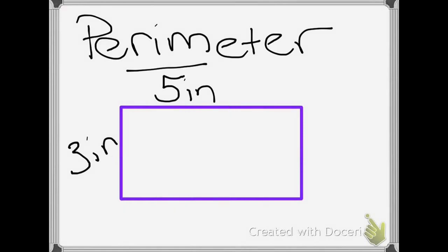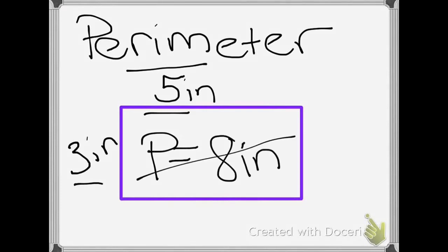One mistake that third graders tend to make is they see one side labeled and the other side labeled, and they think that's all they need. So they add it up, and they say that the perimeter equals 8 inches. But that's not true, because we have to add each side, not just 2 of the sides.